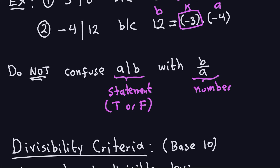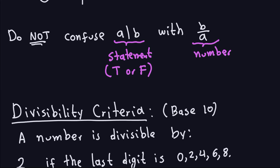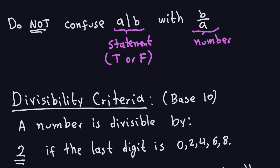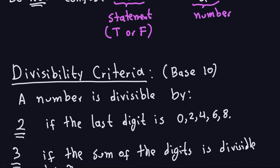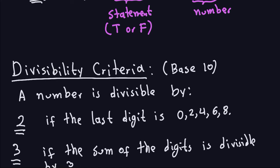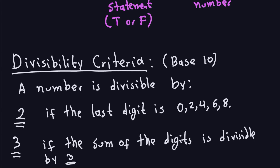Sometimes you want to know when some number is divisible by another, so I'm going to write down some divisibility criteria. All of these are in base 10. A number is divisible by 2 if the last digit is 0, 2, 4, 6, or 8 — basically, the number is even. A number is divisible by 3 if you sum the digits and that sum is divisible by 3. You can apply this repeatedly if the sum is still a large number.